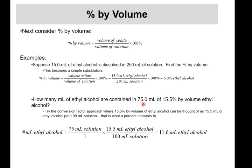How many milliliters of ethyl alcohol are in 75 mL of 15.5% by volume ethyl alcohol? Think of the percent as a conversion factor: 15.5 mL of ethyl alcohol per 100 mL of solution. Start with 75 mL of solution, multiply by 15.5 mL ethyl alcohol over 100 mL solution — the milliliters of solution cancel out — and you get 11.6 mL of ethyl alcohol.